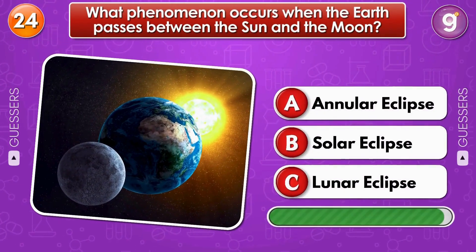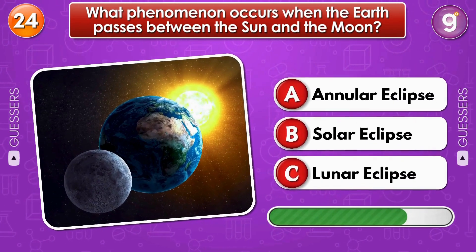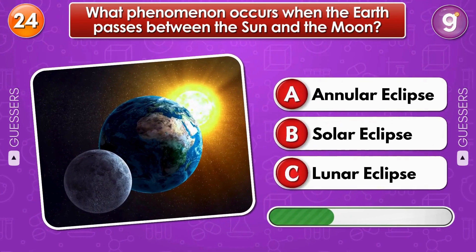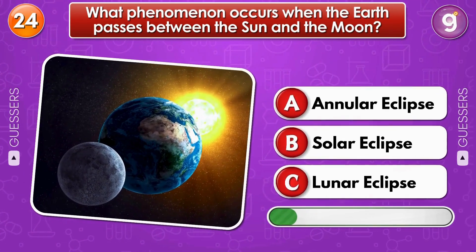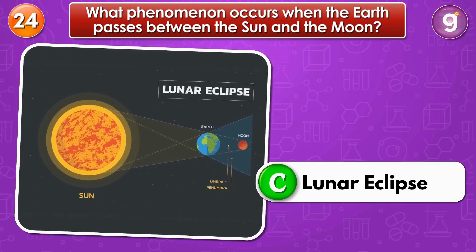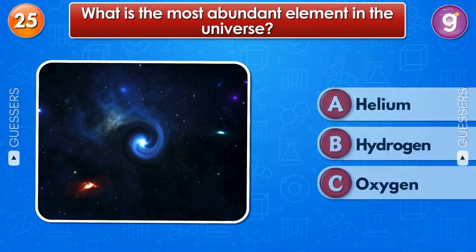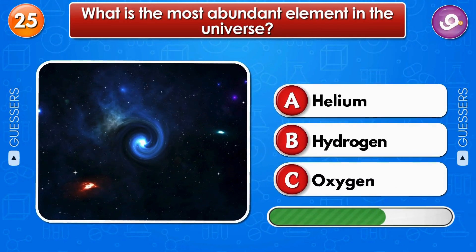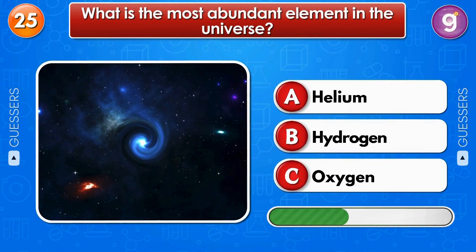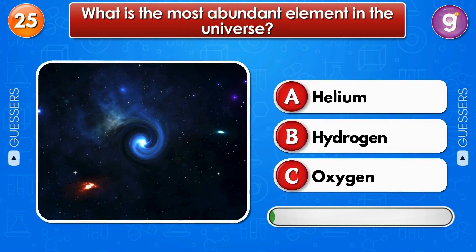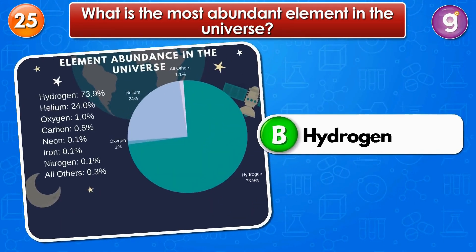What phenomenon occurs when the earth passes between the sun and the moon? Lunar eclipse. What is the most abundant element in the universe? Hydrogen.